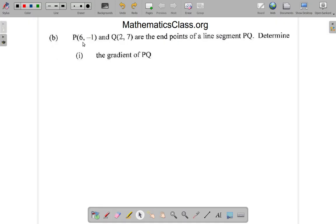But anyway, we continue. Part B says P, the point P(6, -1) and Q(2, 7) are the endpoints of a line segment PQ. Determine the gradient of PQ.